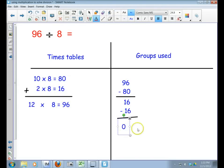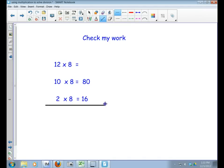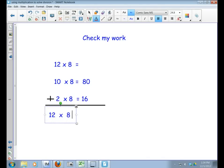I know that 12 times 8 equals 96, so I'm going to check my work. Let's break that down: 10 times 8 equals 80, and 2 times 8 equals 16. Now I'm going to add them up—I have my 2 plus my 10, that's 12 times groups of 8, which equals 96. I'm back to where I started with 96, so that tells me I have the right answer.